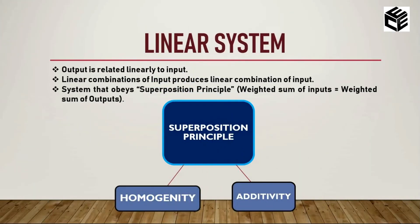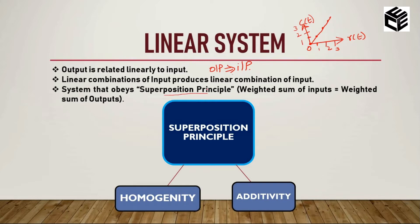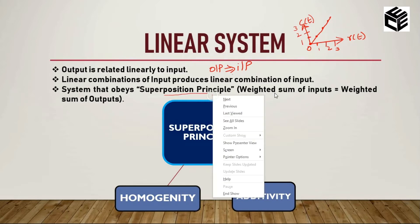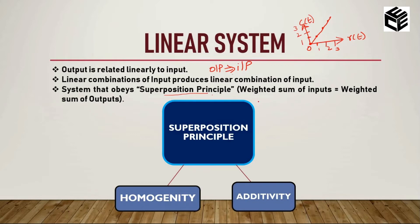Next is the linear system. If the output of the system is linearly related to the input then it is called a linear system. We can also say the linear combination of input gives a linear combination of output. In other words, a linear system is a system that obeys the superposition principle — weighted sum of inputs equals weighted sum of outputs. The superposition principle follows two properties: homogeneity and additivity.